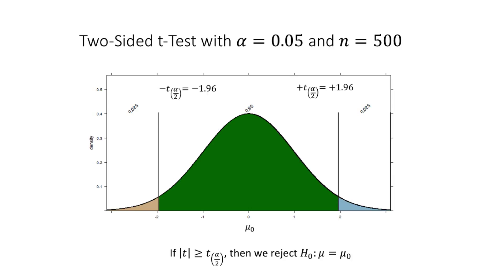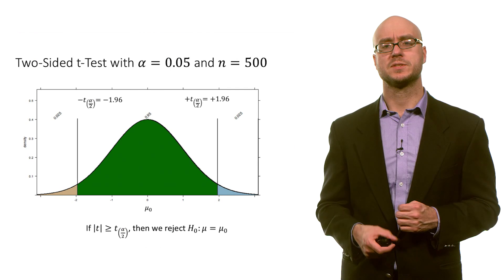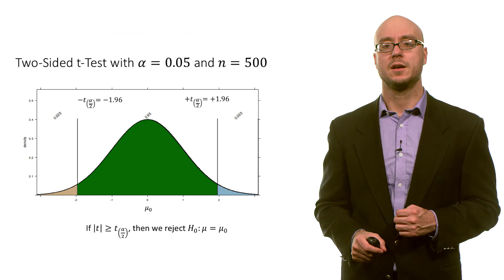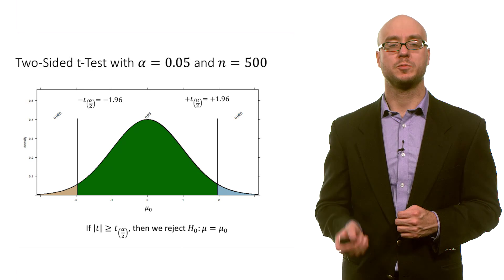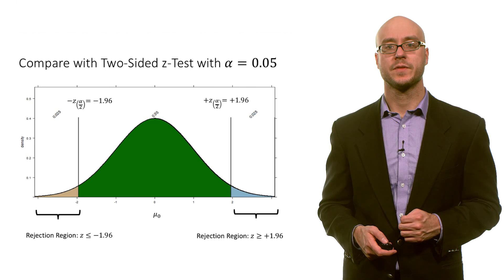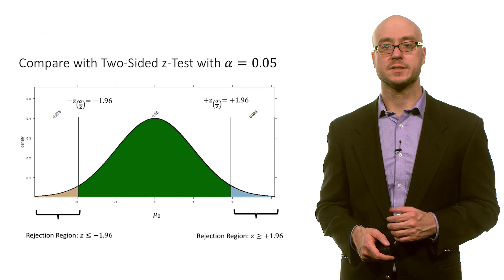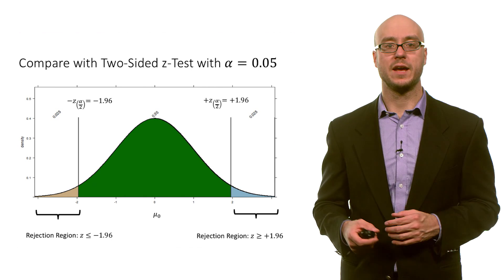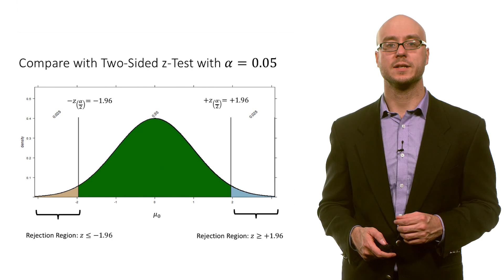You can see that the critical values change depending on our sample size, and the critical values are the benchmark by which we interpret our t-test statistic. We can compare this with a two-sided z-test, which has critical values of negative 1.96 and positive 1.96. The key point is to examine how these critical values and p-values change depending on the nature of the t-distribution.